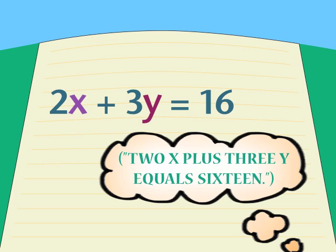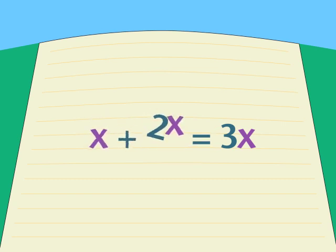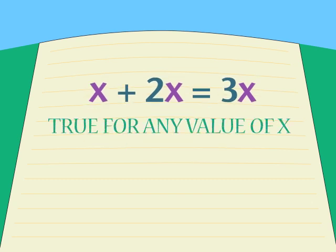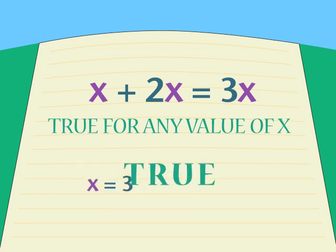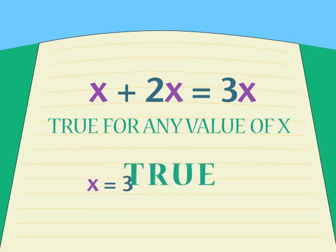A false equation isn't worth much, so we prefer the other kind. A second important thing to know about what an equation is not — there's something that looks a lot like an equation, but isn't. It has an equal sign, it's a complete statement, a sentence, and it's even true. And there's the trouble: it's too true. It's true no matter what value x has. If x is 1, 2, or 3, it's still true. That doesn't tell us a thing about x. We call this kind of statement, which is always true, an identity.